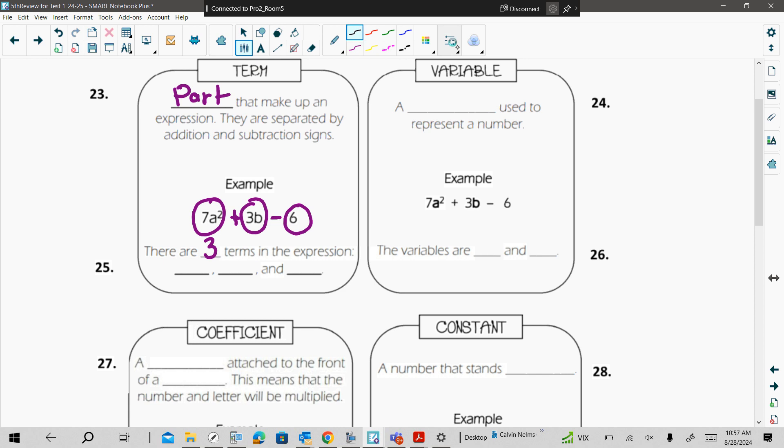Our terms are the following. We have 7a squared. Notice that this is in standard form because the exponent is listed first. We have 3b and we have the constant 6. So I'm going to ask, what is the term or how many terms do you have in this expression? That would be like how I would test you on this, on your vocabulary on this.